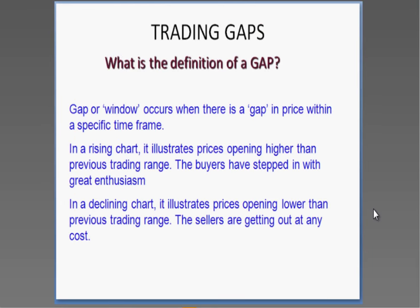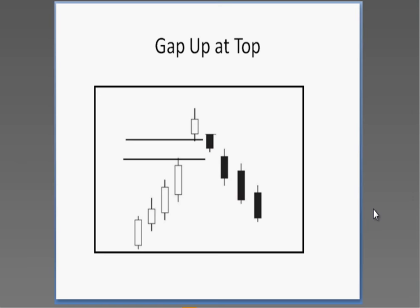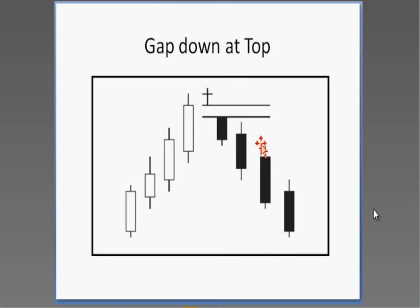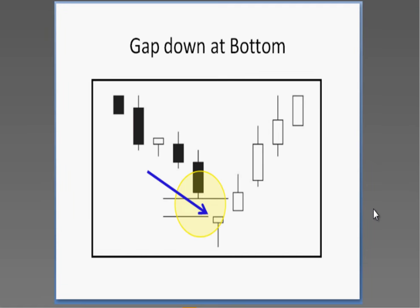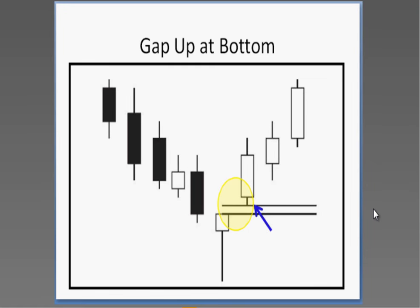A gap — or window in Japanese terminology — occurs when there's no price trading in the same area; there's a space between the trading range of yesterday and today, whether on the bullish or bearish side. It tells you there's been a tremendous increase or decrease of investor sentiment. There's a gap up at the top, a candlestick signal followed by a gap down at the top, a gap up from a signal in the oversold condition, or a gap down and a signal in the oversold condition.